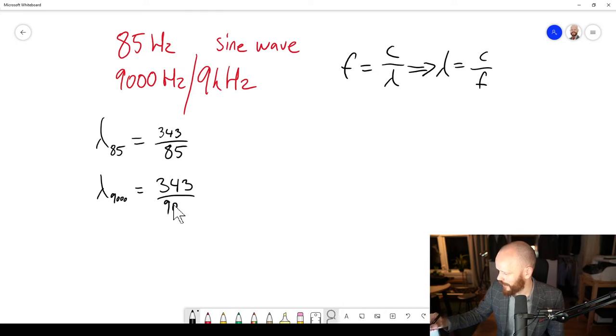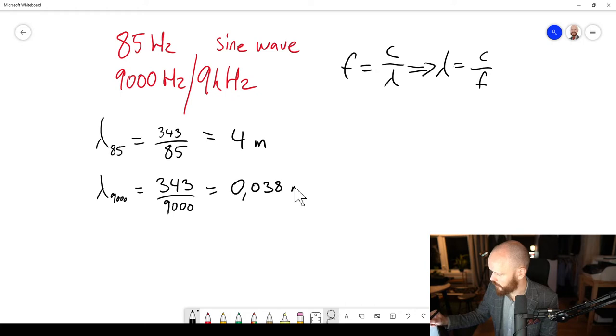Which wavelengths do these correspond to? Let's find out. So in the first case we get 343 divided by 85, which is around 4 meters. And in the second case, 343 divided by 9,000 is around 0.038 meters. So you can see there's quite a bit of a difference here in wavelength.